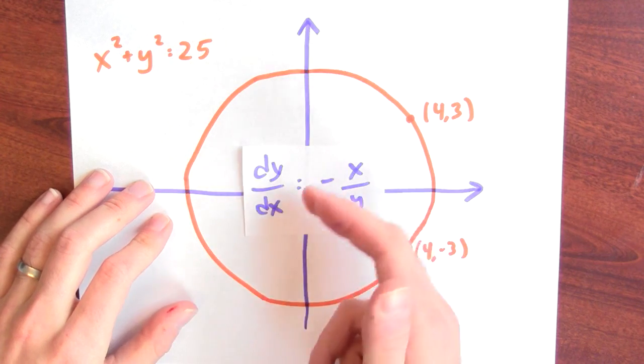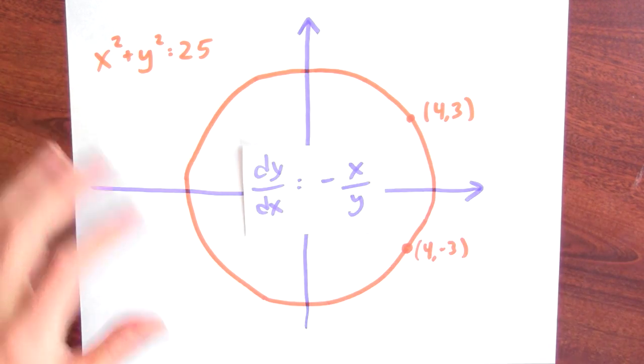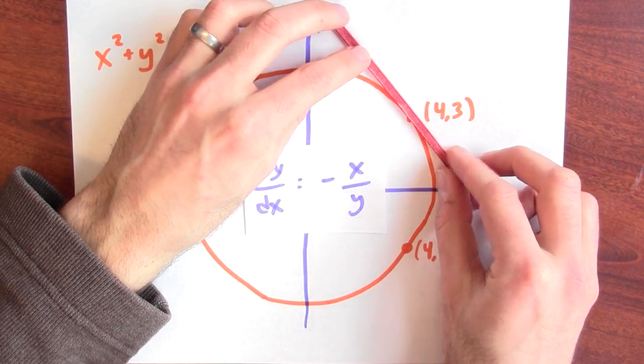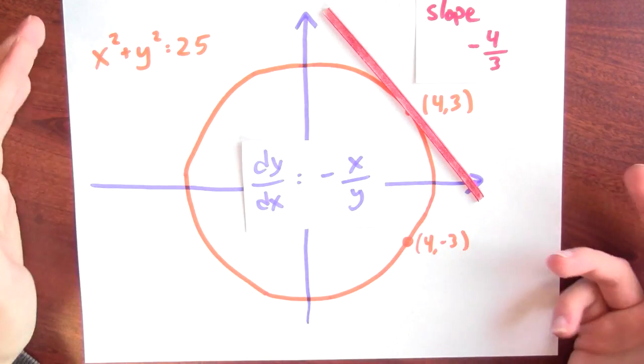And what I'm saying is the slope of the tangent line is negative x over y. So if you pick that point, say 4, 3, and you ask what's the slope of the tangent line to the circle at the point 4, 3, this equation's telling you the slope is negative 4 thirds.